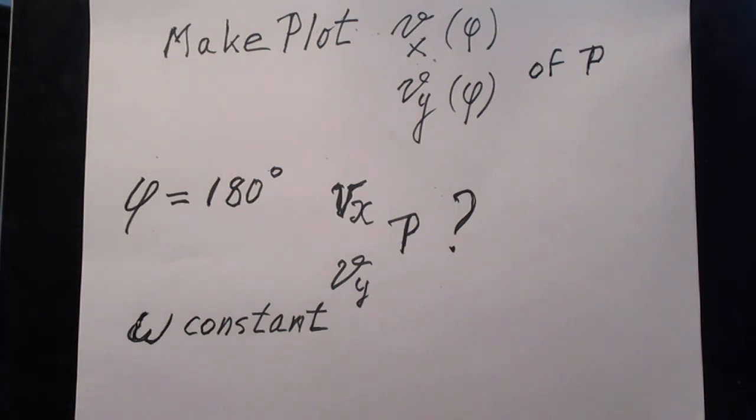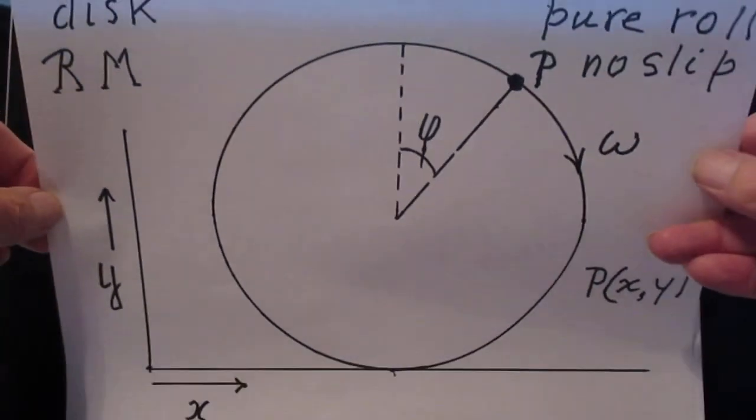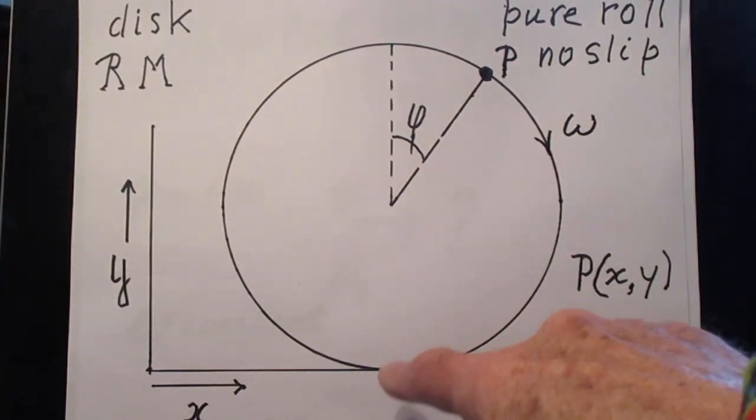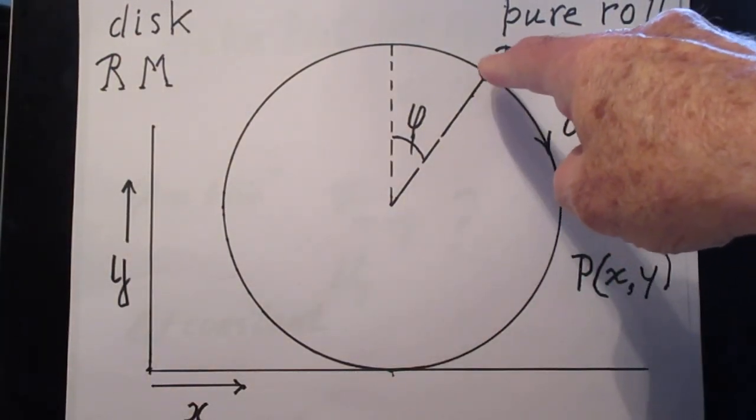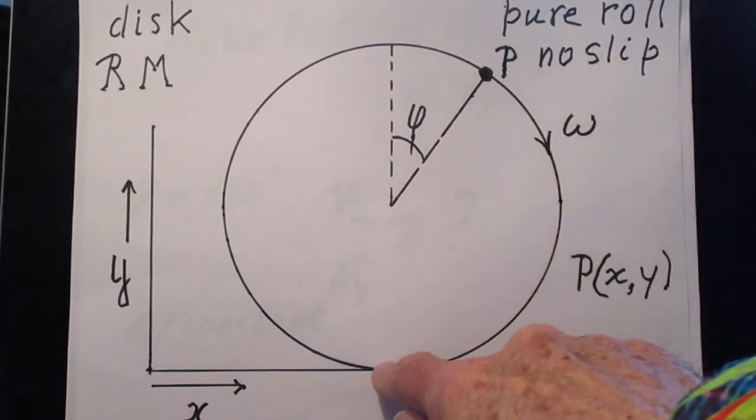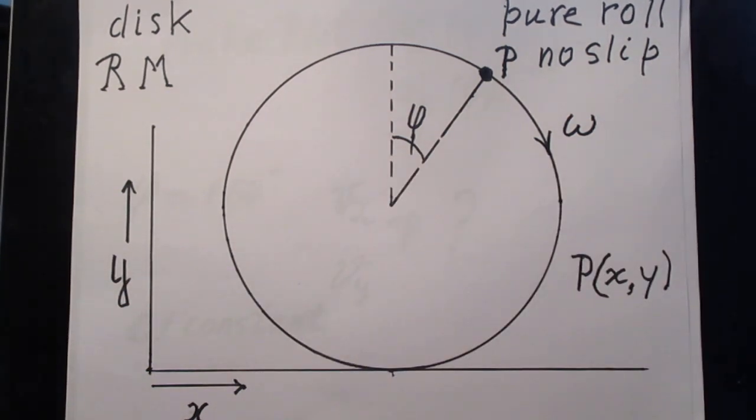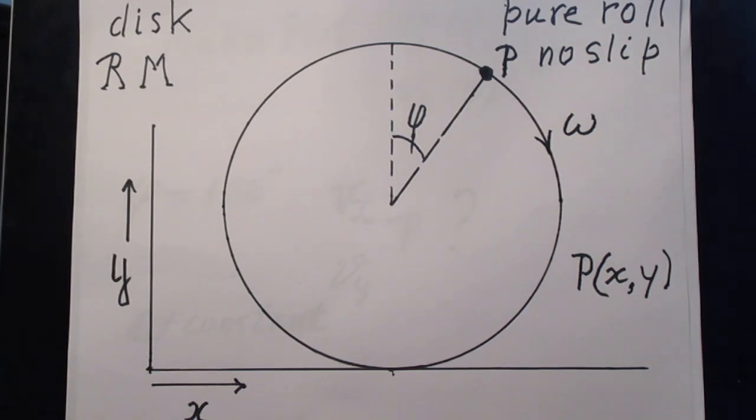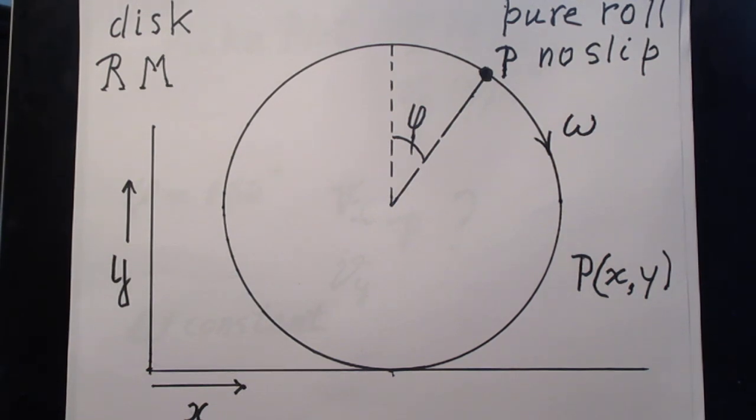And the reason for this problem is I want you to understand what the velocity of that point P is when it reaches this point, both in X-direction and in Y-direction. It is really a math problem. And would I have been able to do this in high school? Yeah, I think there is very little doubt about that.